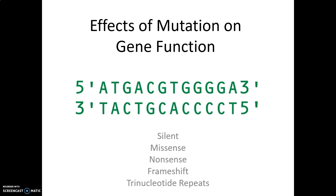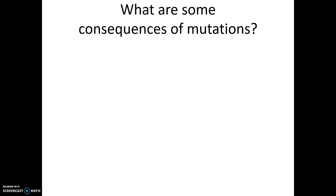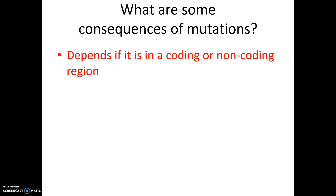What effect does a mutation have on our gene? We're going to talk about different types: silent, missense, nonsense, and frameshift. The simple answer is these consequences depend on where they fall in a gene — are they in a coding or a non-coding region? Are we finding a mutation in an exon, or in a non-coding region like an intron or a regulatory sequence?